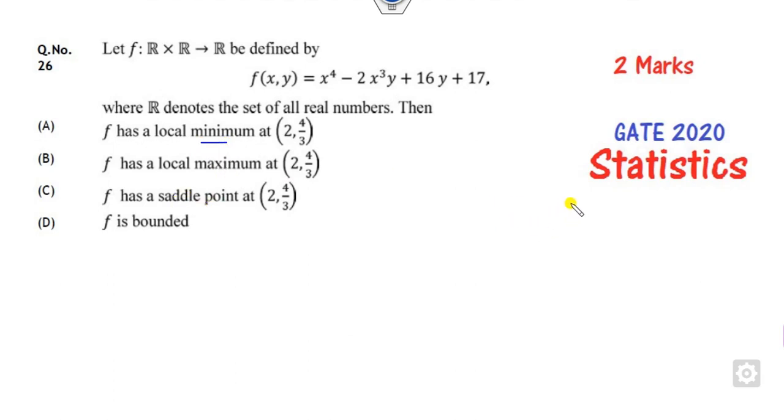So I will tell you firstly the shortcut. How you can check whether it is a maxima, minimum, and so on. For that, you have to firstly define a matrix called H. H is called the Hessian matrix that is related to Fxx, Fxy,